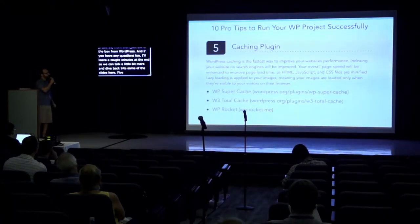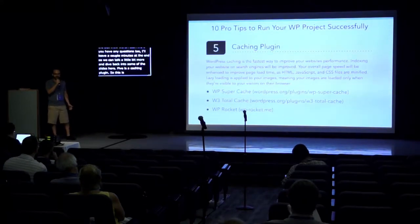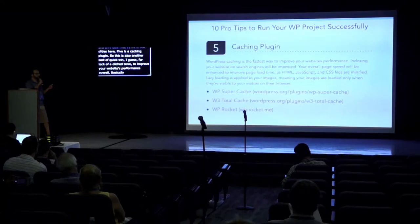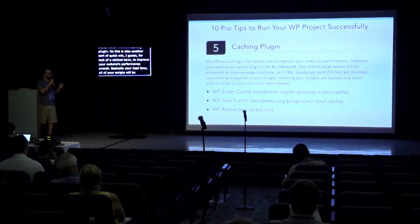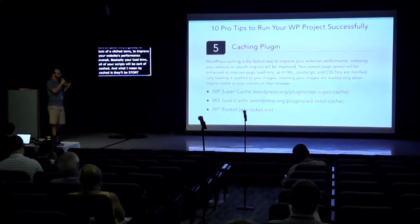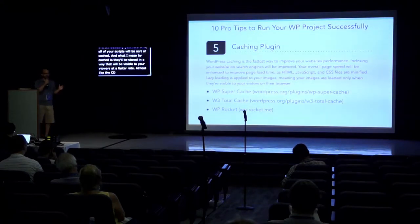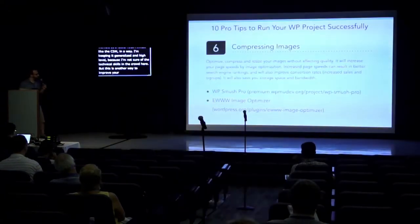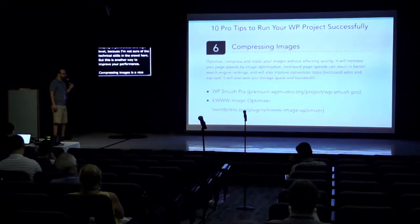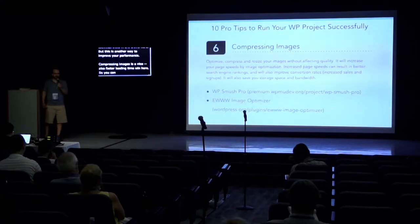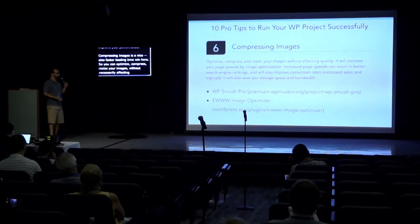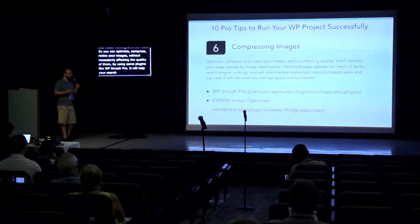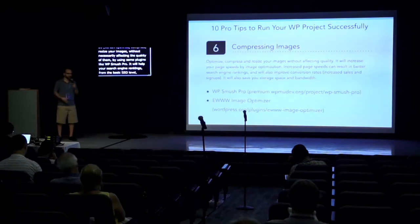Number five is a caching plugin — another quick win to improve your website's performance overall. Basically, your load time and scripts will be cached and stored in a way that makes them visible to your viewers at a faster rate, almost like the CDN. Compressing images is also a faster loading time win. You can optimize, compress, and resize images without necessarily affecting their quality by using plugins like WP Smush Pro, which will help your search engine rankings and page speed, ultimately creating a faster user experience that hopefully leads to more conversions.